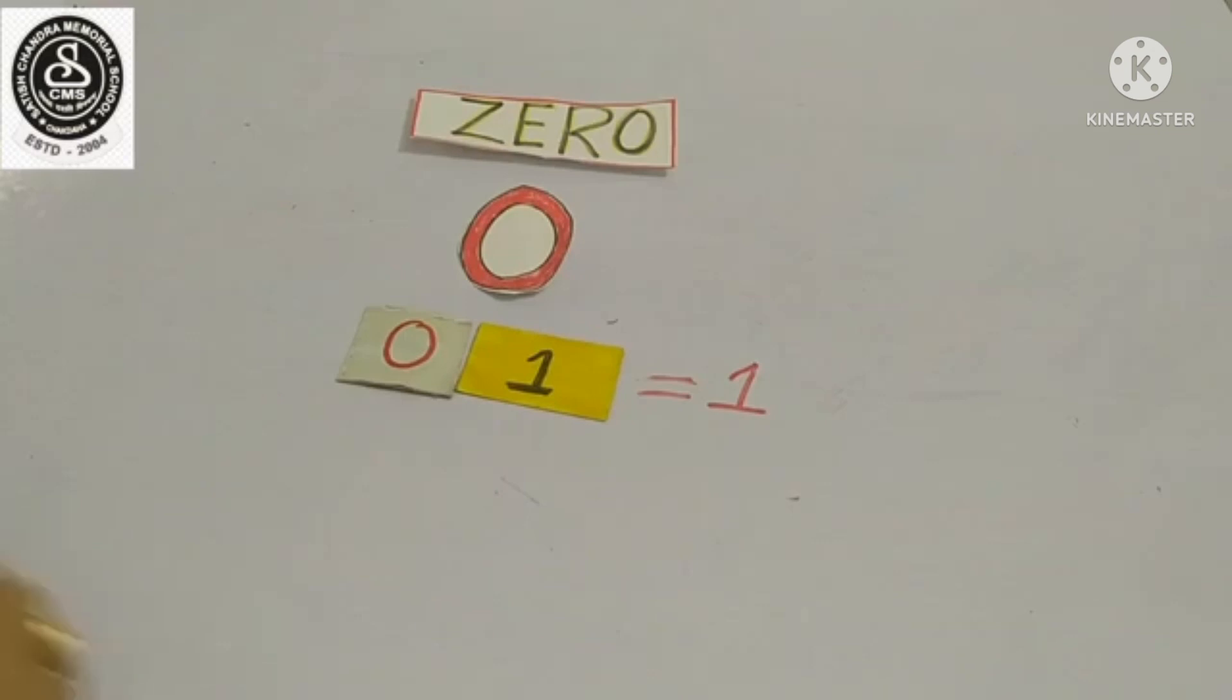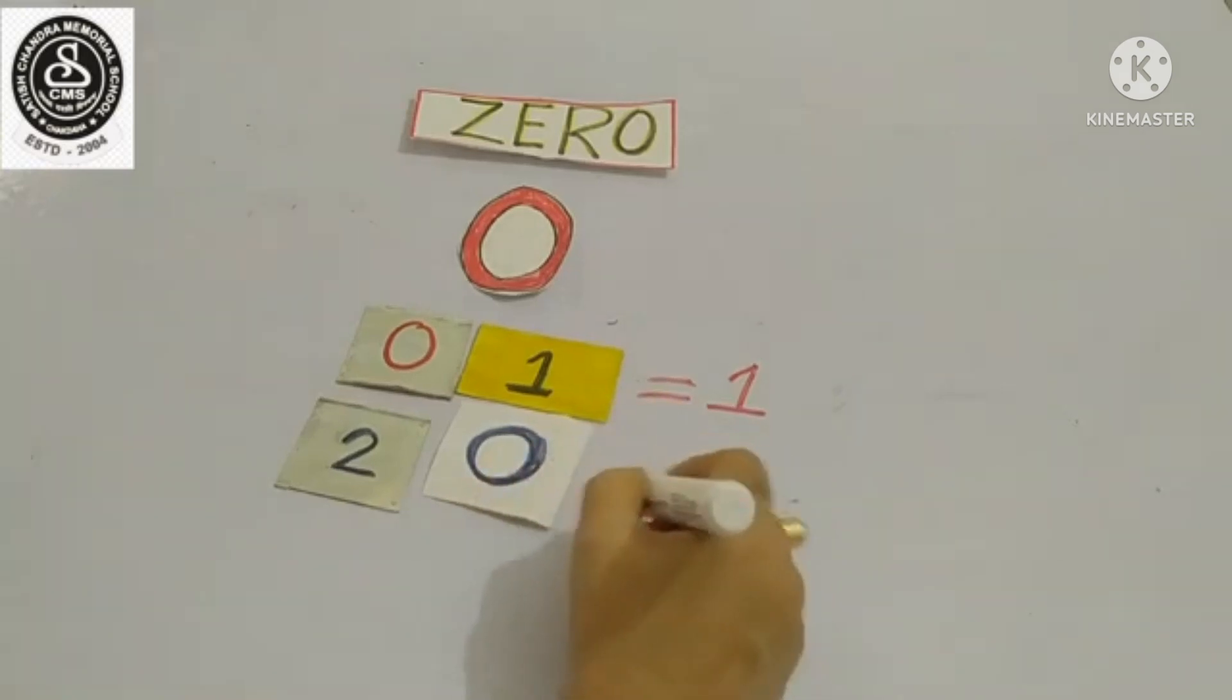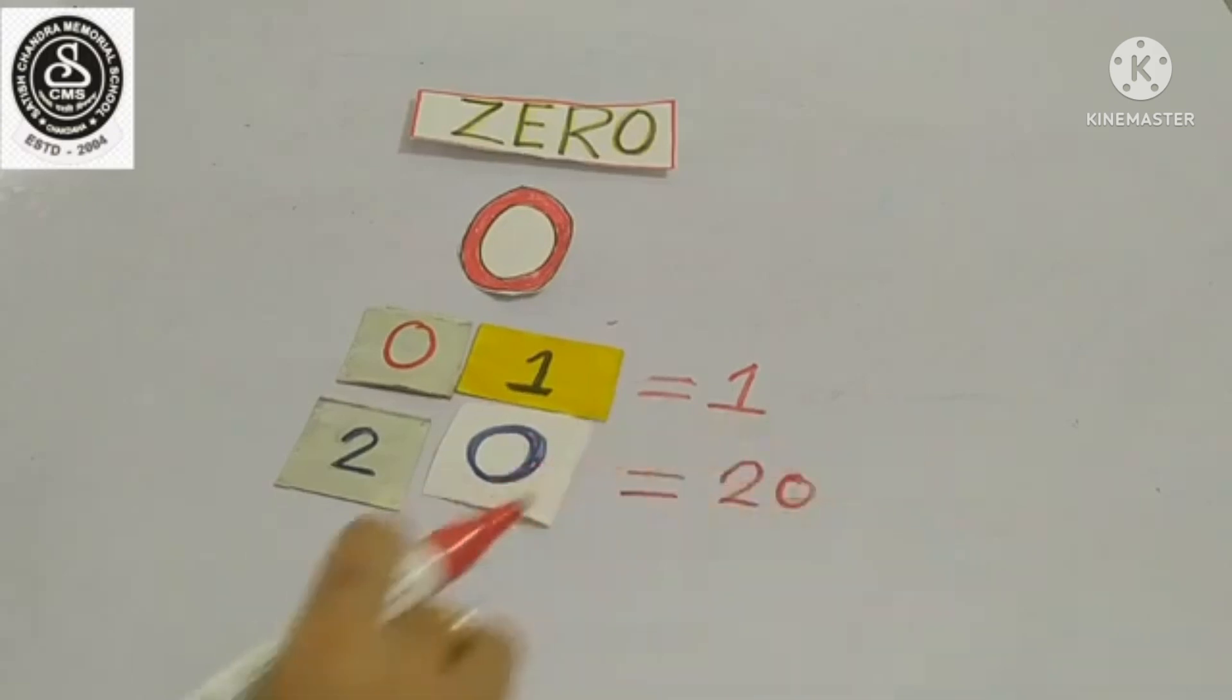But when we add zero after any number, it increases the value of that number. So, two zero, twenty, equals twenty. That means when we add zero after any number, the value gets changed.